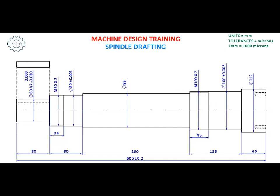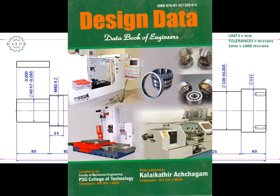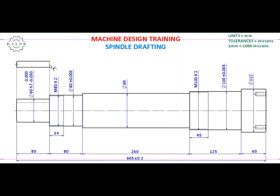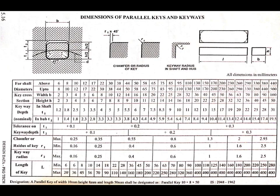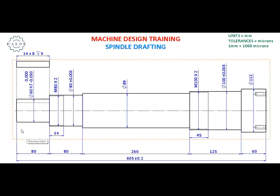We have almost given all the dimensions. The dimension left is the keyway. The keyway dimension is also based on standards and we cannot assign our own dimension. You can see how I am referencing a design data book for all my tolerances. I am going to use a 14 by 8 parallel key, with a keyway depth of 5 mm. The length of the keyway is 80 mm, which is already understood from the linear dimensions, so I will not repeat that value.